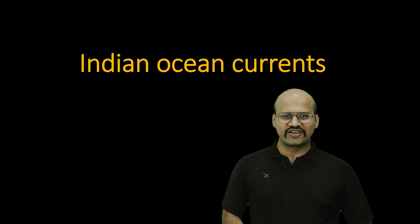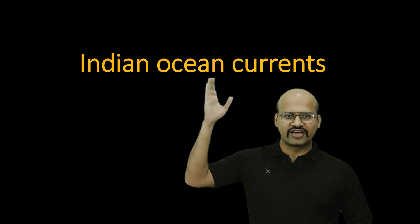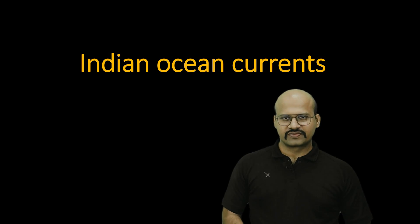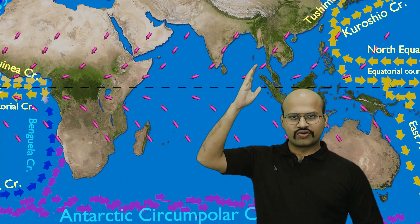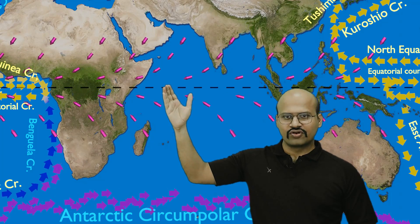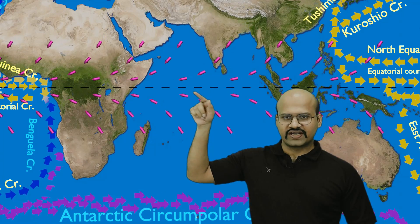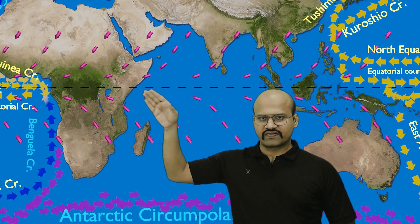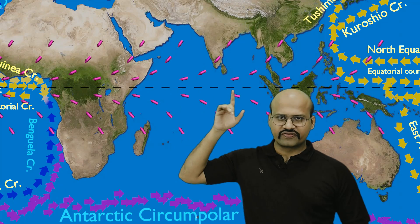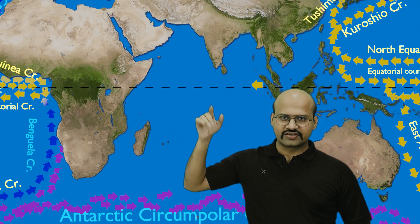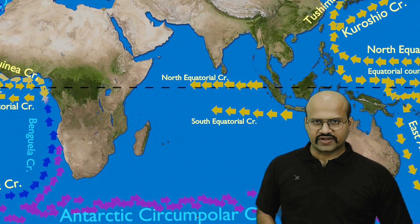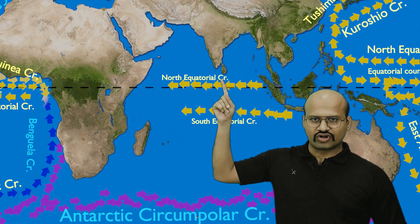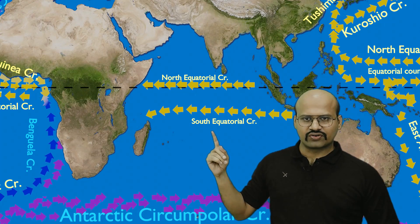Welcome to another video on Zeta Axis. Today we will discuss Indian Ocean currents. We know that trade winds flow towards the equator and then along the equator. Because of these trade winds there are equatorial currents on both sides of the equator — the north equatorial current and the south equatorial current.